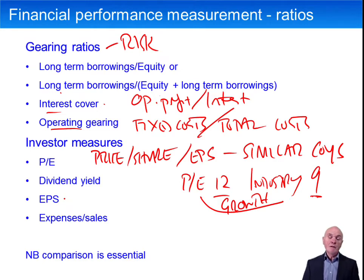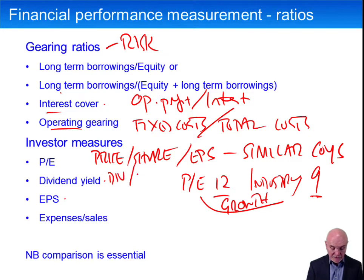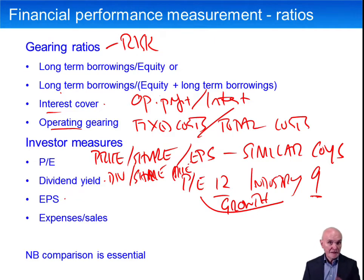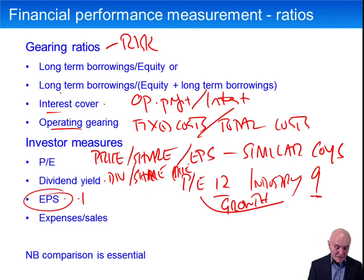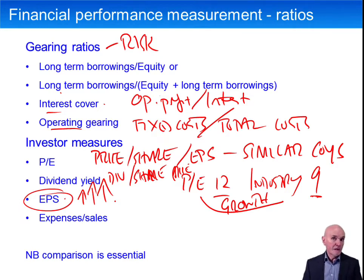Earnings per share is a useful measure. Dividend yield is a little bit arbitrary — it depends on the dividends declared and is basically dividend per share over share price. Directors can move dividends up and down and manipulate this; even if profits fall, directors can keep dividends up to maintain a high dividend yield. But there's no fiddling with earnings per share — it is the earnings available to ordinary shareholders divided by the number of shares, and you want to see a nice steady increase, meaning the company is producing more profit per share.